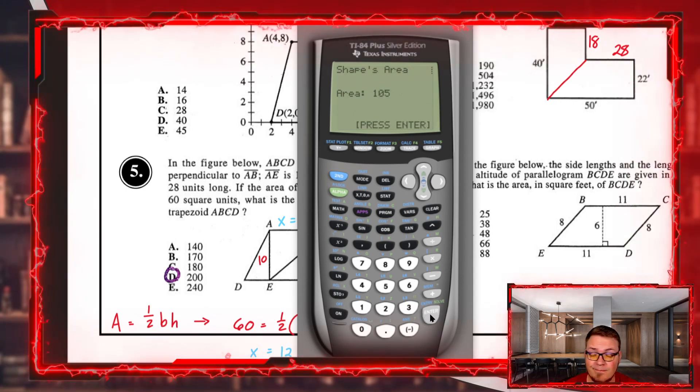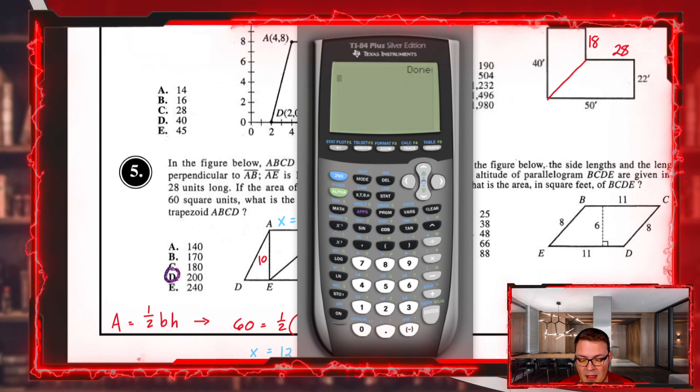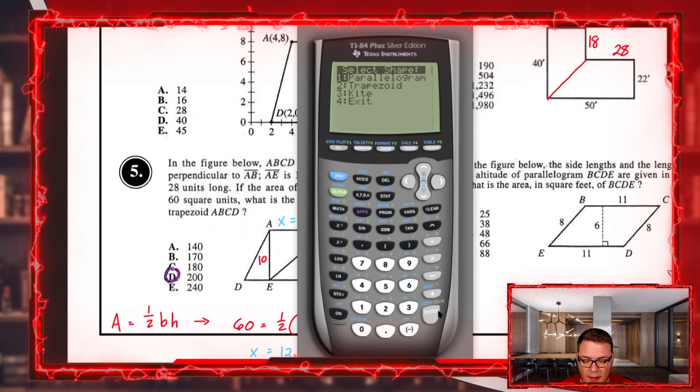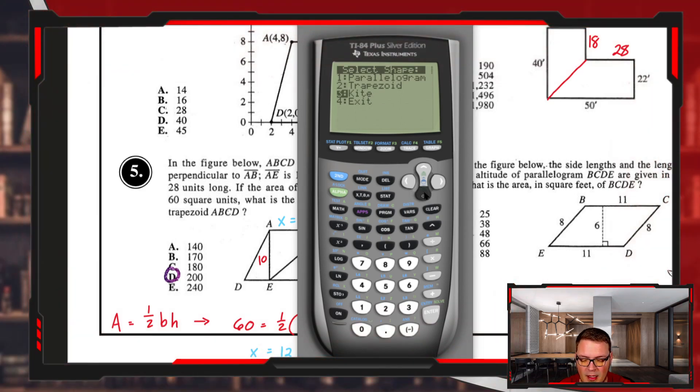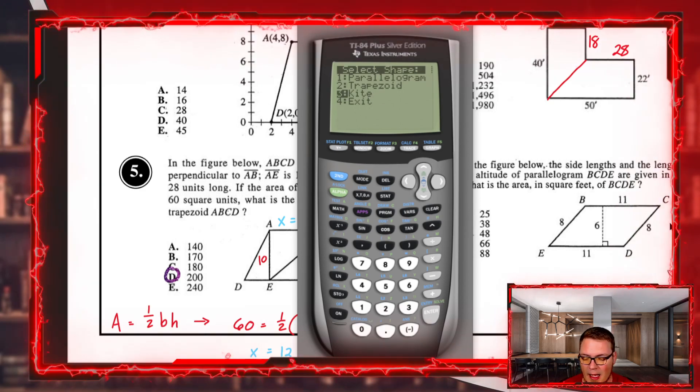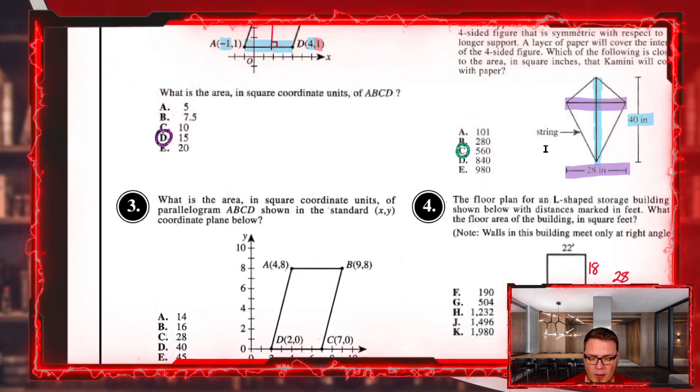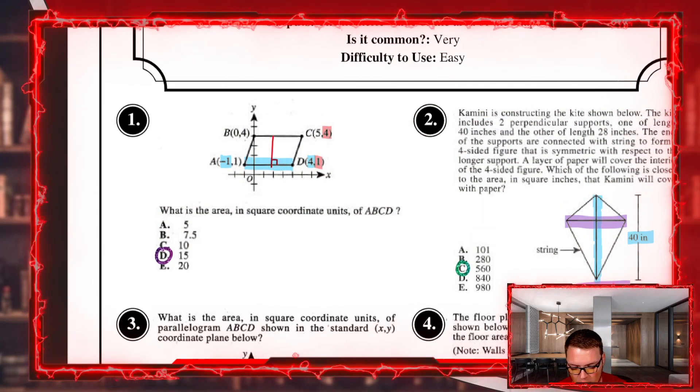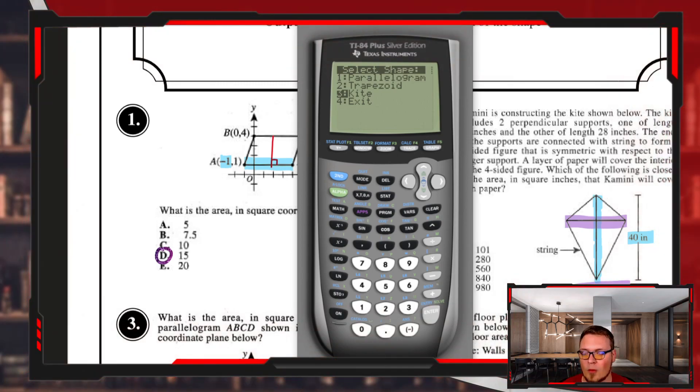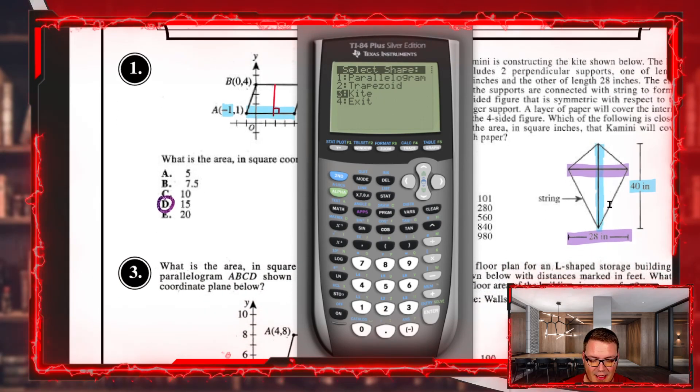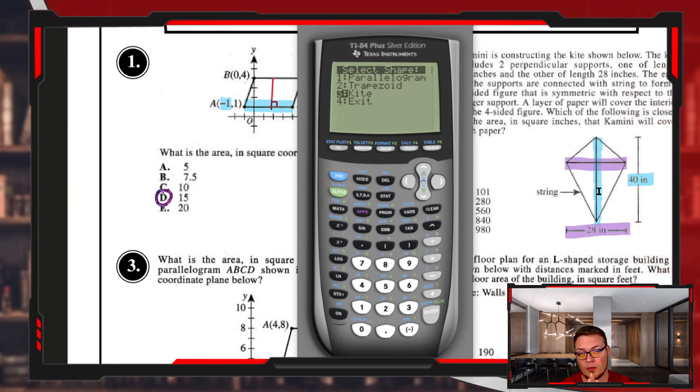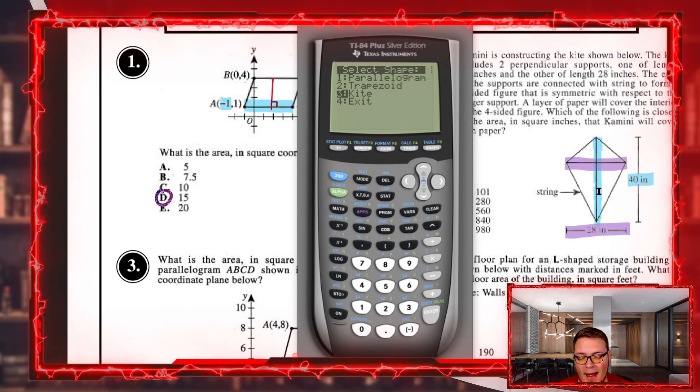The last option is a kite. Kites don't show up very often—they're really rare on the test. This is like the only example I've ever seen, but its formula was easy enough to program. In this example with the blue and purple, you have two diagonals. The blue line and purple line are the two diagonals for the kite.